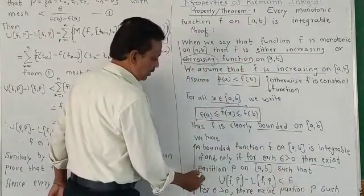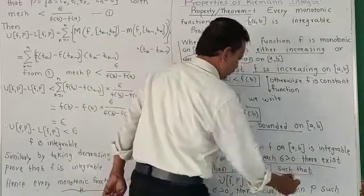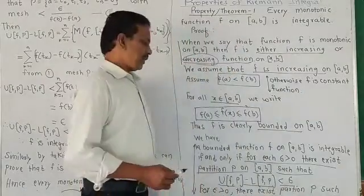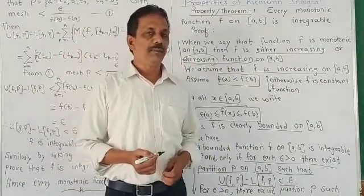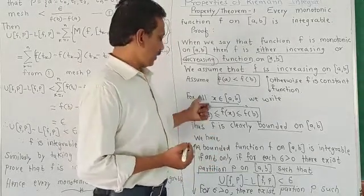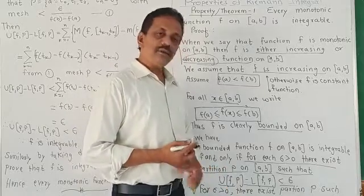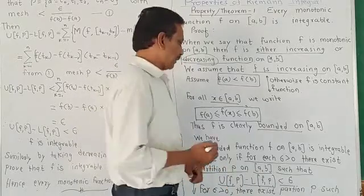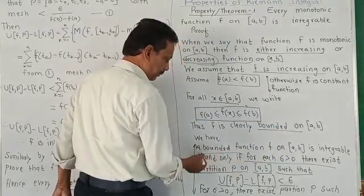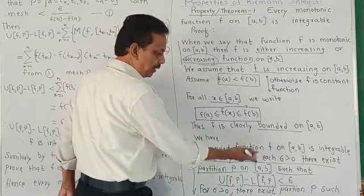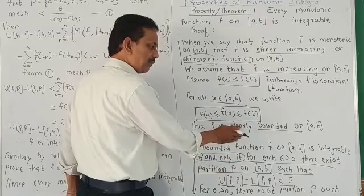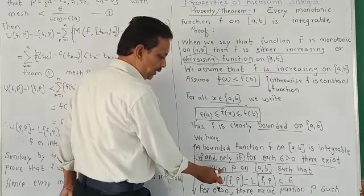The result is: a bounded function F on [a,b] is integrable if and only if for each ε > 0 there exists a partition P on [a,b] such that U(f,P) minus L(f,P) is less than ε. This result is used here. If the function is integrable then this condition is satisfied, and if this condition is satisfied then the function is integrable.